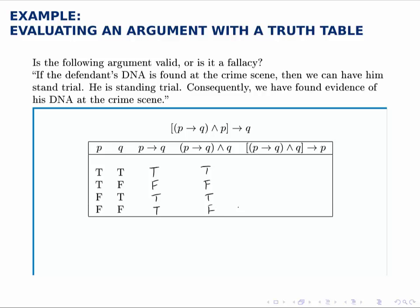Then the final argument, we take that column we just built, which is our premises together, use that as the condition on a conditional statement. So this last column is going to be true except for the case where the premises are true and the conclusion is false. The premises are true and the conclusion is true in the first row. The premises are false in the second row. But in the third row, notice the premises are true and the conclusion P is false. So in that case, the argument is false.